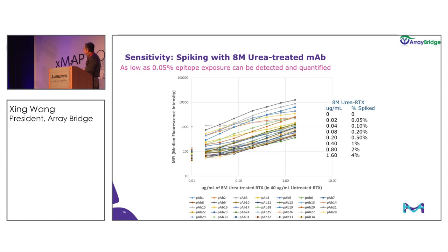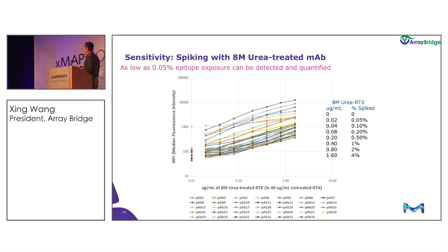This assay is very sensitive. Here we are building 34 different antibody standard curves, and as low as 0.05% change on the surface epitope can be quantified. Many current technologies have sensitivity of only 5% or even 20%, which is not even close to the sensitivity and accuracy of this technology.